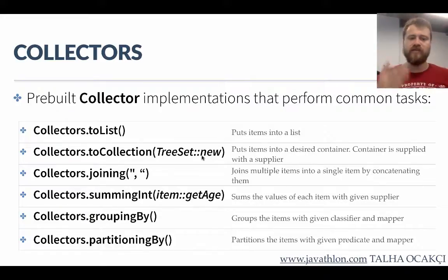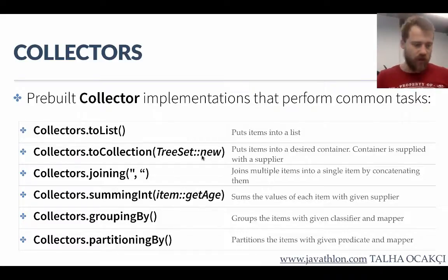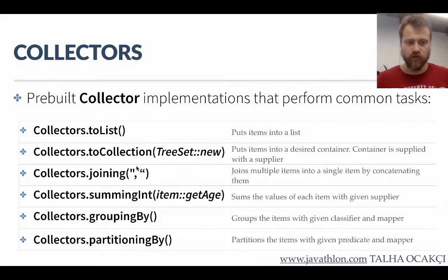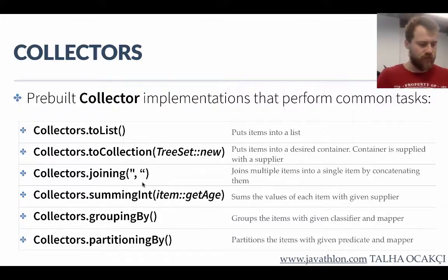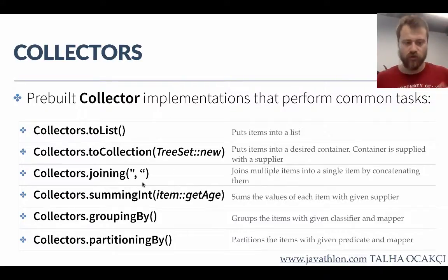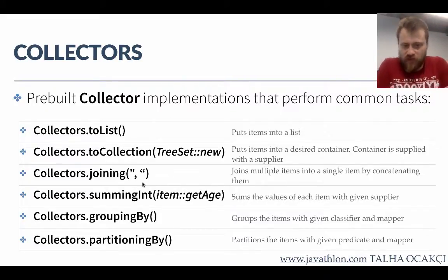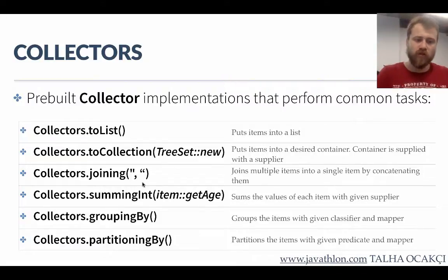The other operation is joining(). Let's say you have 10 items inside your stream. All of these items will be joined by a specified character, and all of them will be reduced into a single item. So this can be used as a string concatenation.